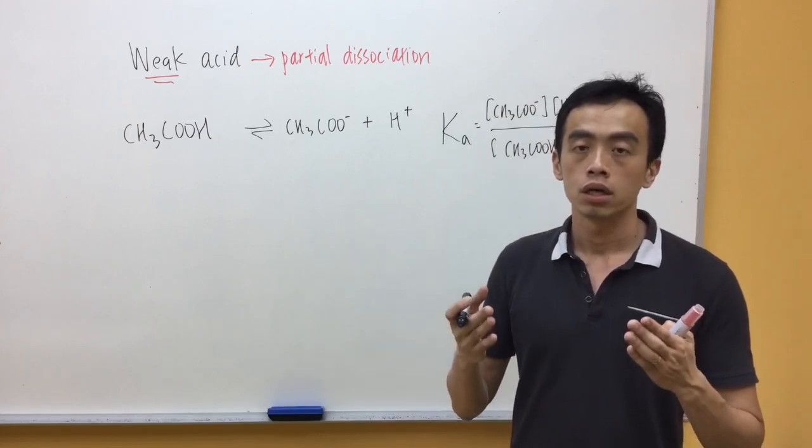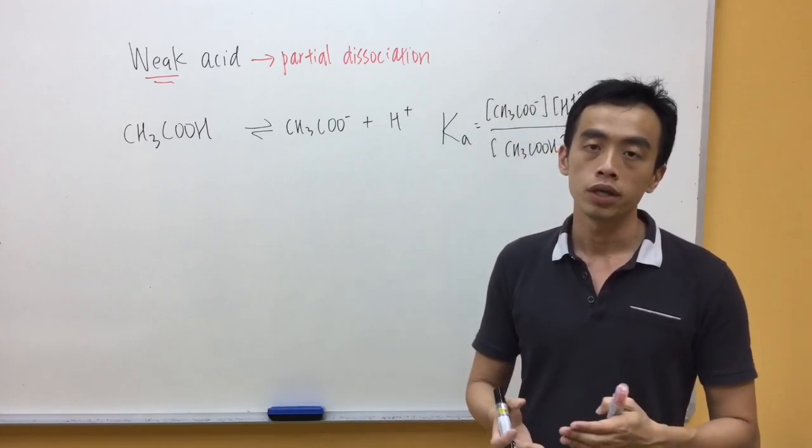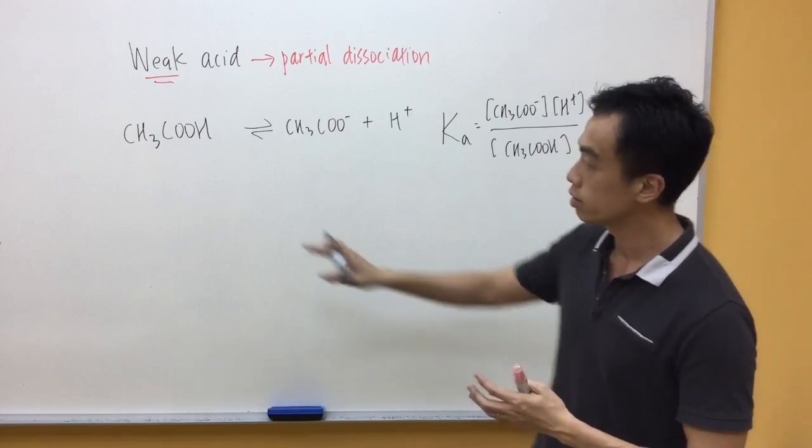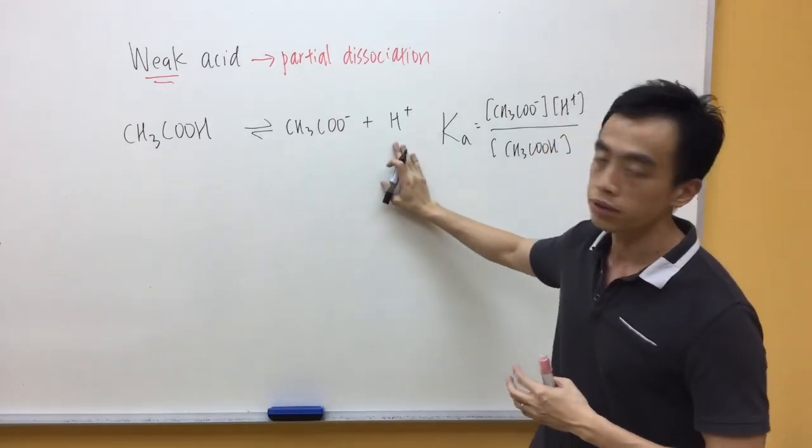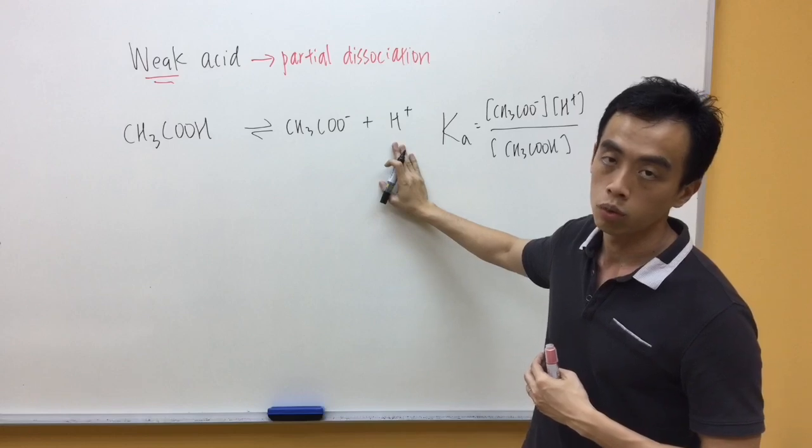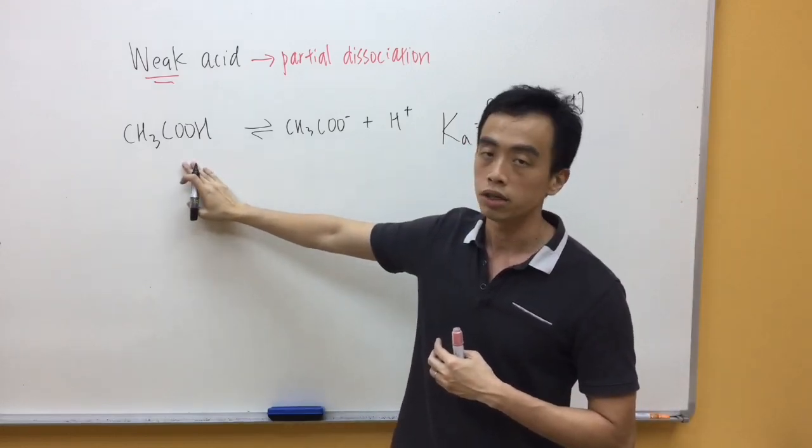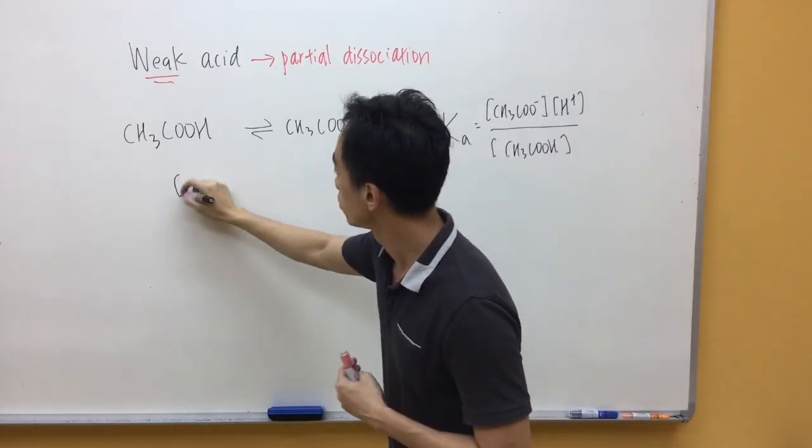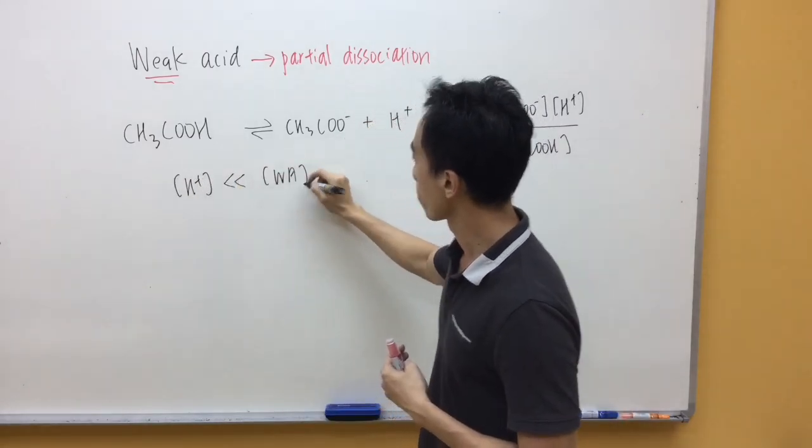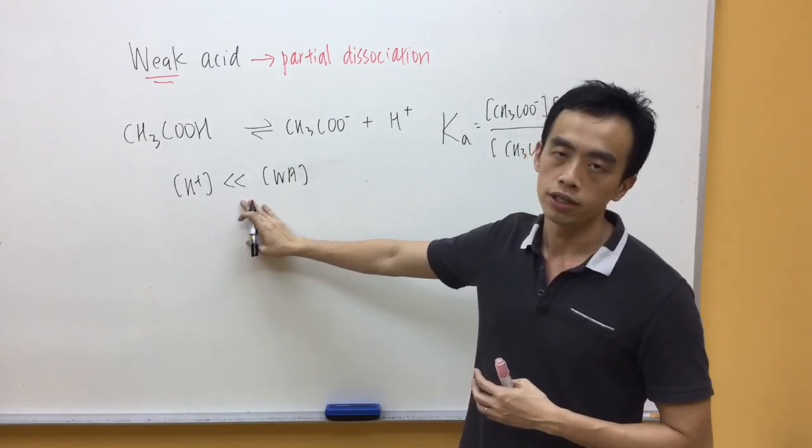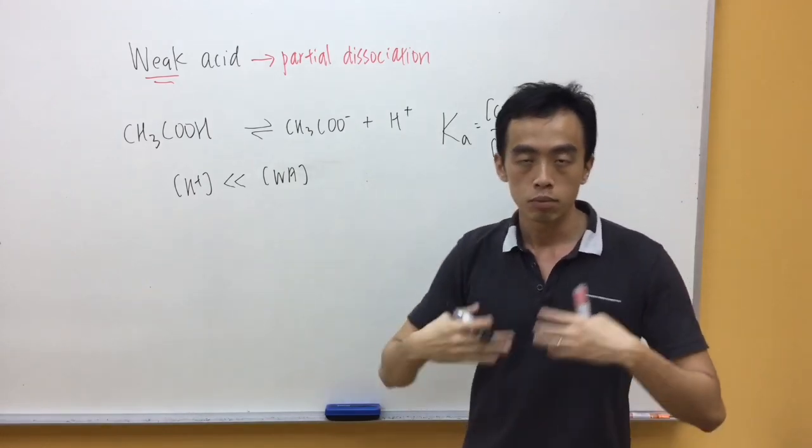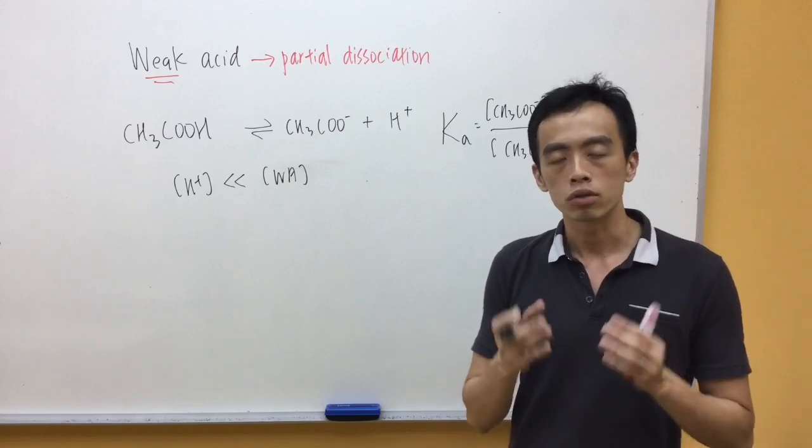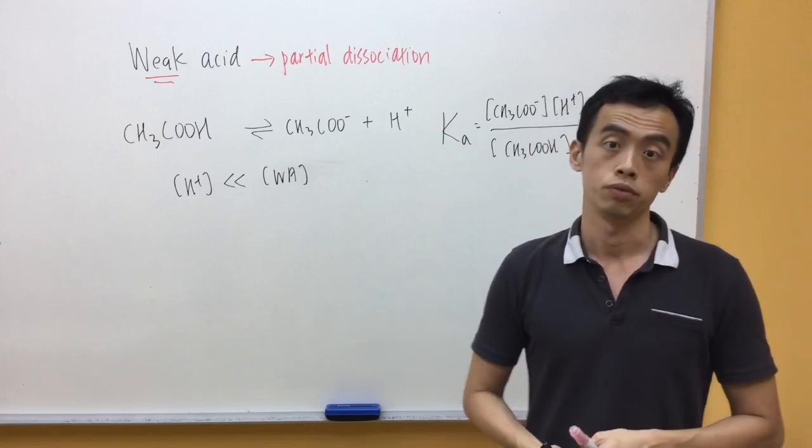Now, if you want to determine the pH of the solution of a weak acid, then you have to look at the concentration of H+ in solution. Because this is a partial dissociation, the concentration of H+ in solution will be less than the concentration of my CH3COOH, or the concentration of my weak acid. In this case, I've written this as much smaller than, because most of the time, the dissociation of H+ in solution is very small. There's only a very small amount of H+ released in solution.